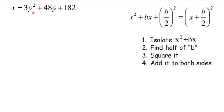Let's start by doing our steps. We want to isolate y² + 48y. To do that, I'm going to subtract 182 from both sides. I'm left with x - 182 = 3y² + 48y. That's the first step.